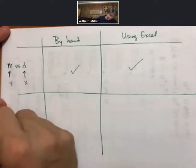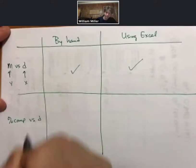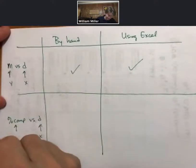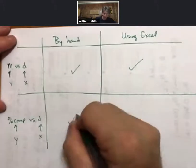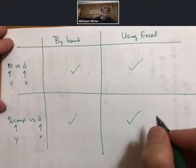You'll also make a graph for percent comp versus density where density will be on the x-axis and percent comp will be on the y-axis. So by hand and using Excel. And it'll be interesting to see how your graphs look.